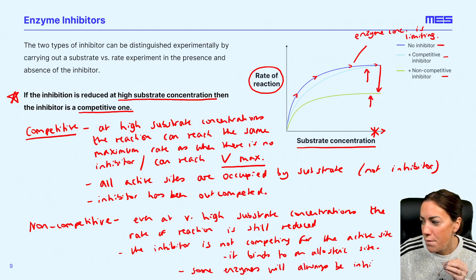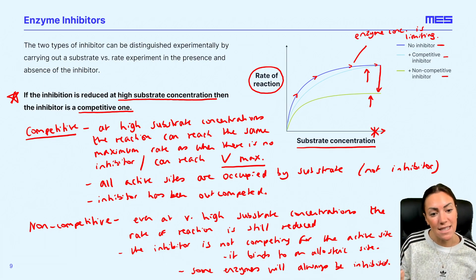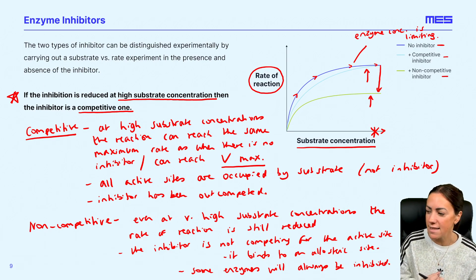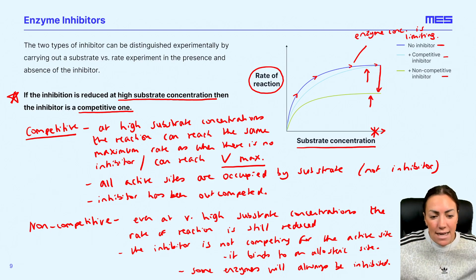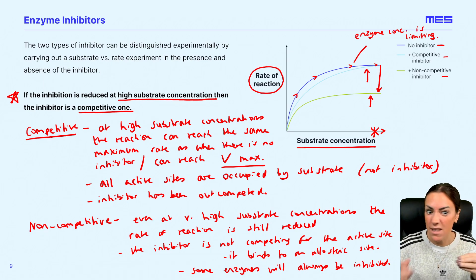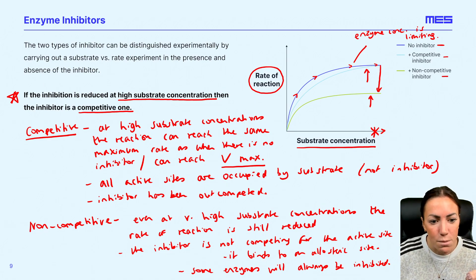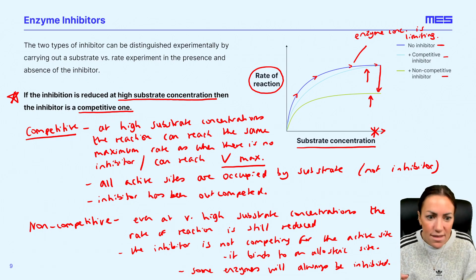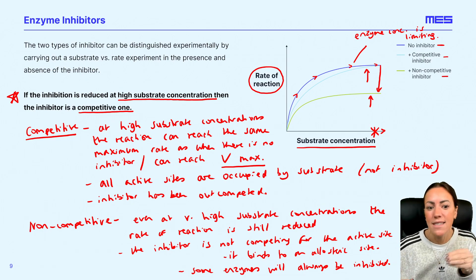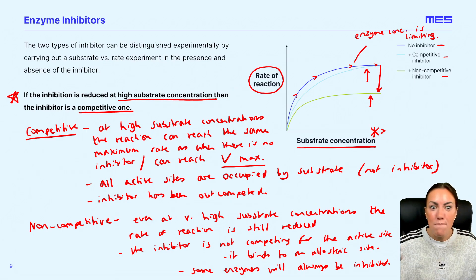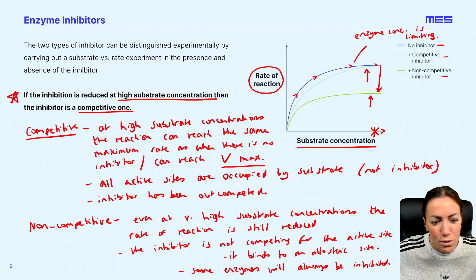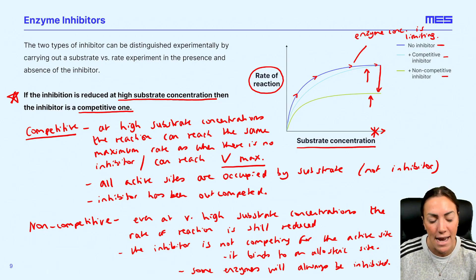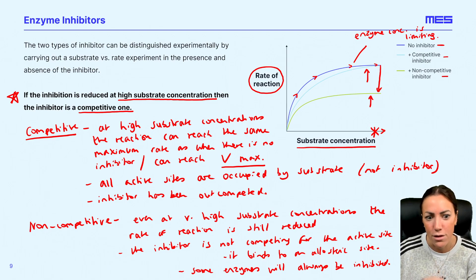We could put numbers to it: if you've got 50 enzymes with 50 available active sites, a million substrates, and only 20 inhibitors, those 20 inhibitors are not competing with that million substrates. So those 20 inhibitors can still bind to 20 allosteric sites and can still inhibit 20 enzymes. The rate of reaction will still be reduced. Even with 5 million substrates, some enzymes will always be inhibited because they're not in competition with the substrate.